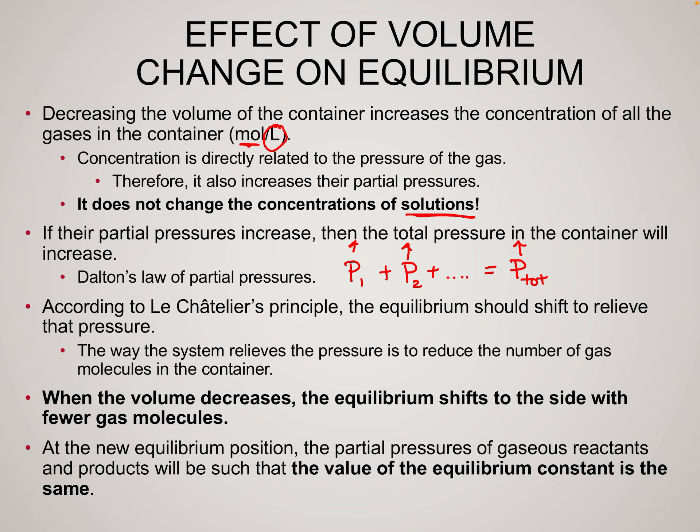The way this plays out with Le Chatelier's Principle: when we decrease the volume, we are applying a stress to the system by increasing the pressure. The equilibrium will shift to relieve the pressure by reducing the number of gas molecules in the container. We look at the coefficients — just like when comparing K versus Kp, we add up the coefficients on each side. The equilibrium will shift to the side with fewer gas molecules.